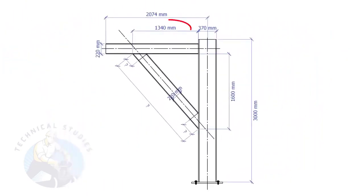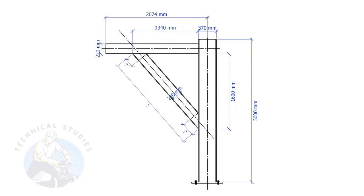In this example, the top leg length is 1340 mm and the vertical leg length is 1600 mm. What will be the length and the cutback of the bracing?